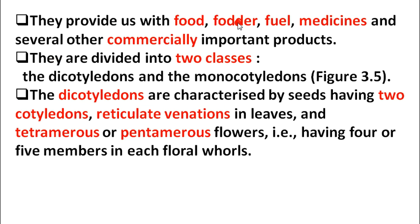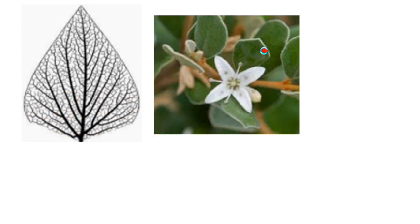Angiosperms are divided into two classes: dicotyledons and monocotyledons. This is a very important question — the further classification of angiosperms. 'Di' means two and 'mono' means one, referring to the number of cotyledons. Dicotyledons are characterized by seeds having two cotyledons, reticulate venation in the leaves — you can see this network-like structure here — and tetramerous or pentamerous flowers.